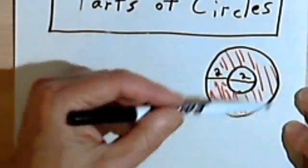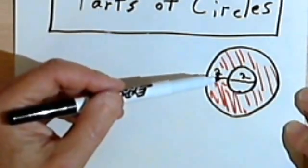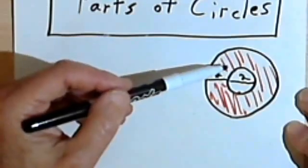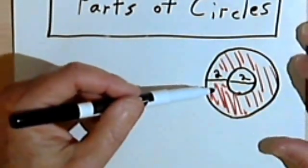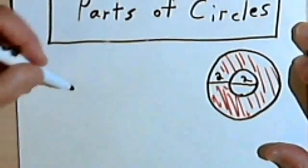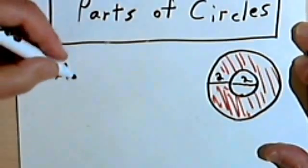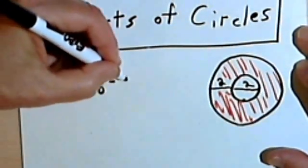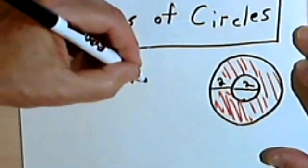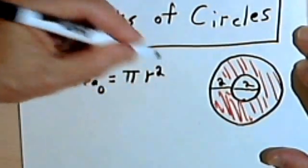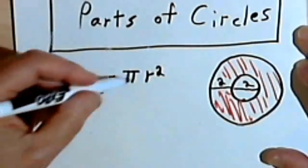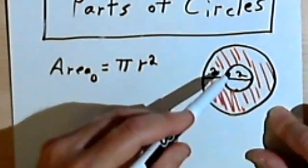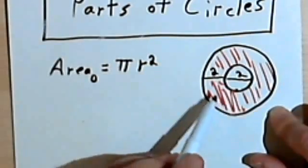So let's say we're given this figure, like a doughnut, and we're told to find the red area. First of all, let's remember what we know about the area of a circle. The area of a circle is equal to the number pi times the radius squared. Using this formula and thinking this problem through, we can find the red area.